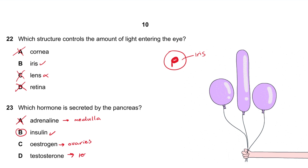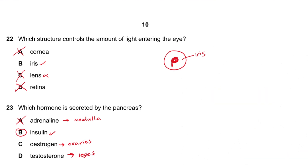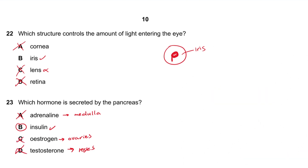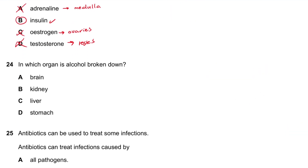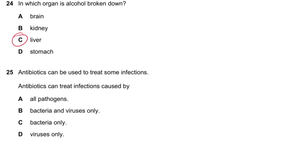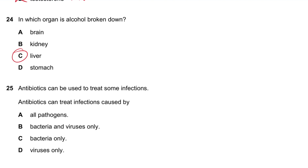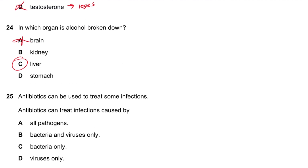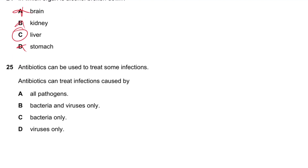Question 24: In which organ is alcohol broken down? The liver — the liver is the organ that breaks down most toxins. Obviously not the brain, stomach, or kidney.